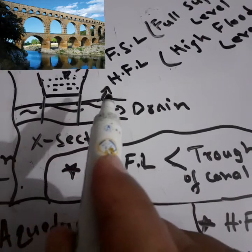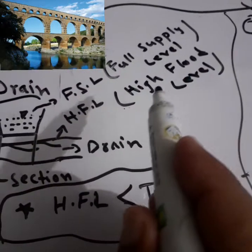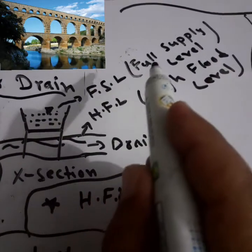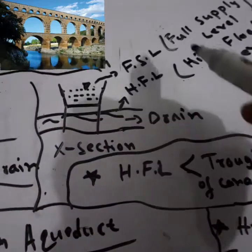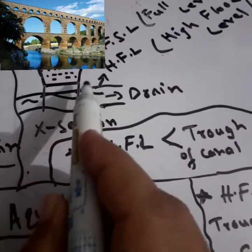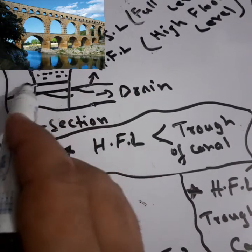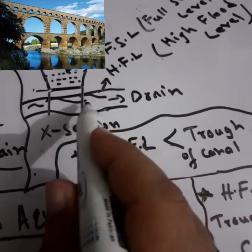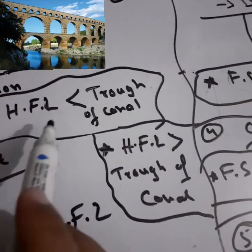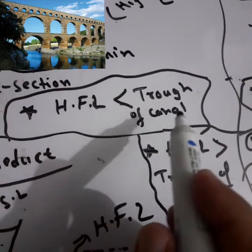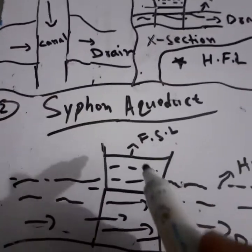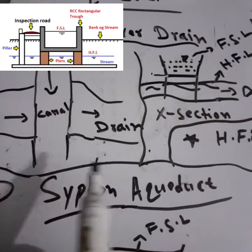In the cross-section, you can see the drain water below, and the top level of the drain water is called HFL — High Flood Level. The top water level of the canal is called FSL — Full Supply Level. Remember these two names: FSL and HFL. In an aqueduct, the HFL of the drain is below the trough of the canal. So the condition is: HFL < trough of canal. This is the main point that defines an aqueduct.